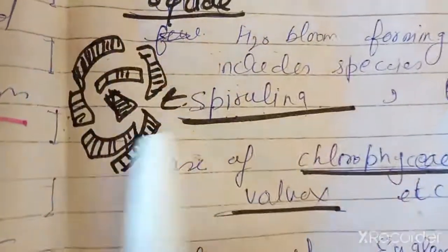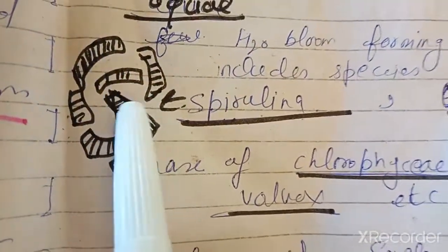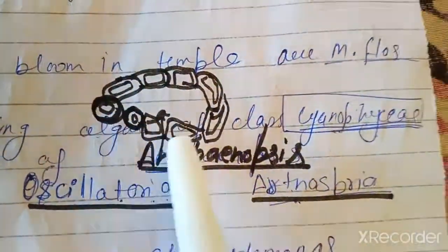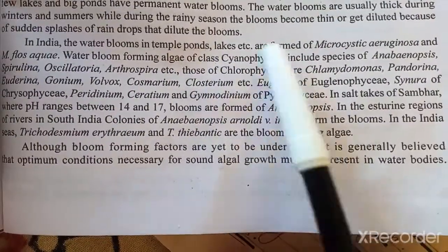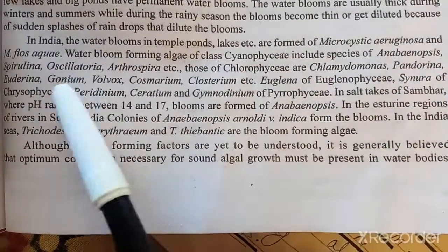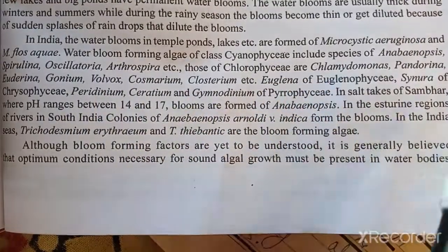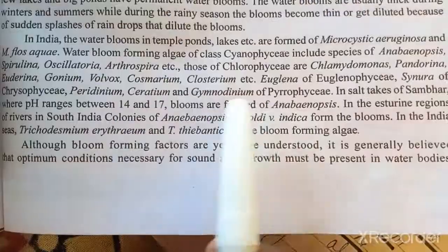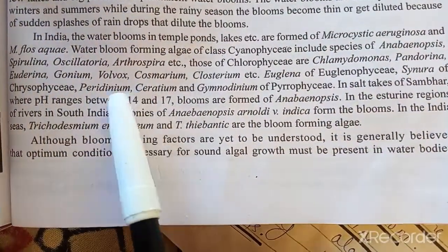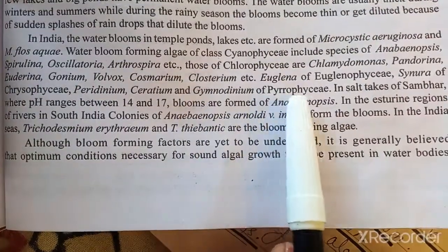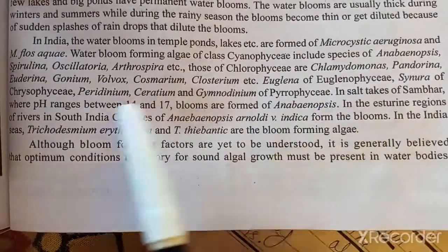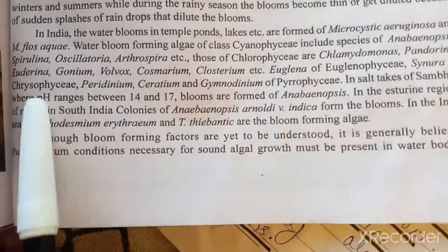This structure shown is Spirulina, and this is Anabaena and its structure. Talking about Chlorophyceae, we find Chlamydomonas and Volvox. Under Euglenophyceae we find Euglena, under Charophyceae we find Spirogyra, and under Dinophyceae we find Ceratium. The salt content and pH value are also relevant factors.